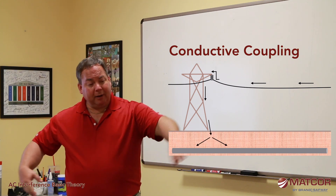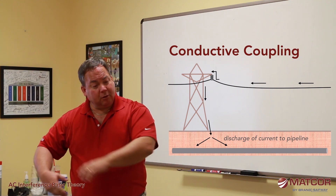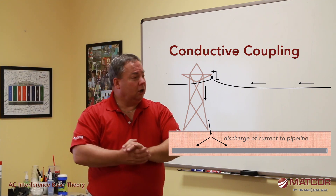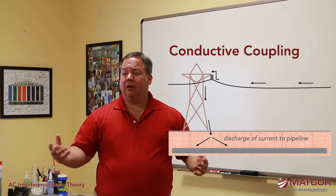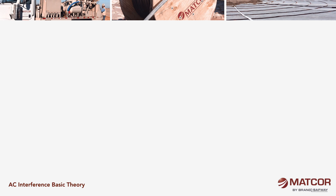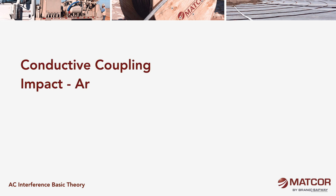Now I've got this pipeline that's in the earth, also subject to this huge discharge of current because of some failure of the high voltage transmission line. One concern in conductive coupling is arcing — direct arcing. Arcing is a flow of current through the soil. Arcing is bad because an arc of electricity is like a welder — it could actually burn a hole in the pipeline wall.